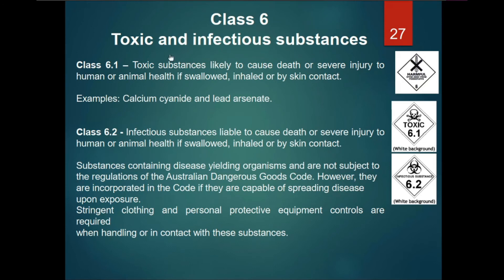Class 6 includes toxic and infectious substances. Class 6.1: toxic substances likely to cause death or severe injury to human or animal health if swallowed, inhaled, or absorbed through skin contact. Examples: calcium cyanide and lead acetate. Class 6.2: infectious substances liable to cause death or severe injury, containing disease-yielding organisms. Substances capable of spreading diseases upon exposure fall under the Australian Dangerous Goods Code. Stringent clothing and personal protective equipment controls are required when handling these substances.